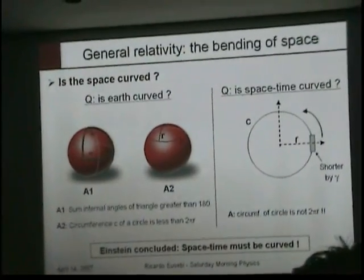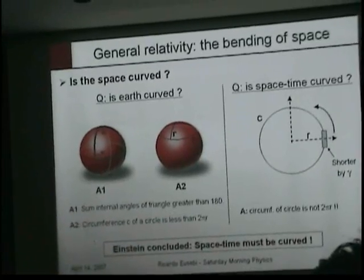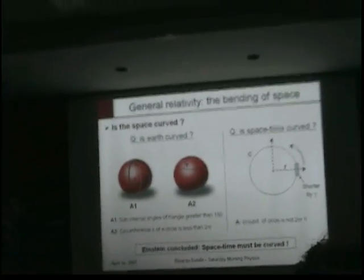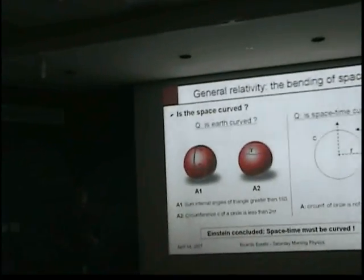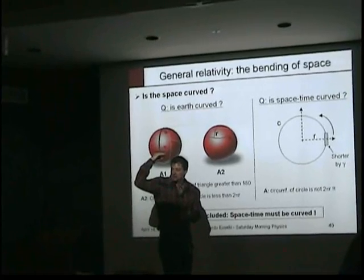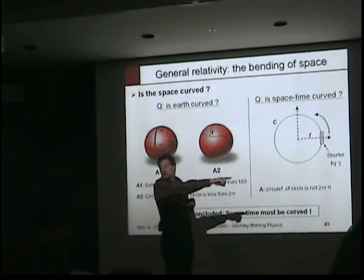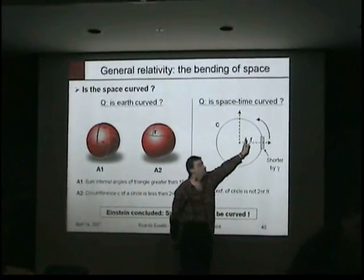Does the circumference of the circle get smaller, like in this particular thing? Wouldn't the radius get smaller too? No, because remember, the length contraction was in the direction of the movement. So if I'm moving like this, you see me shorter in this direction, but not in height. Because my height is perpendicular to the direction of movement. And the radius is actually perpendicular to the direction of movement.